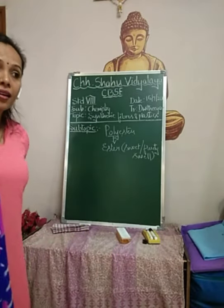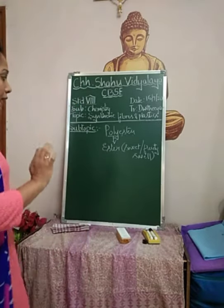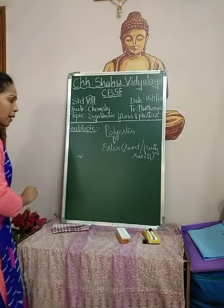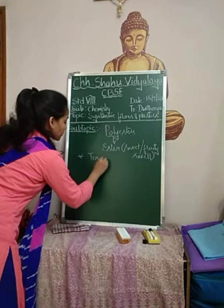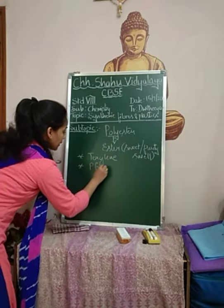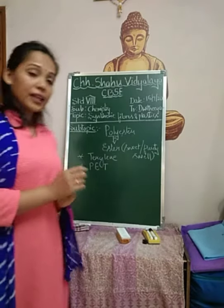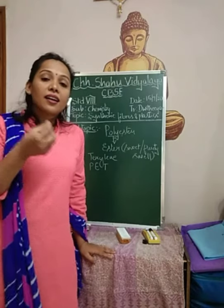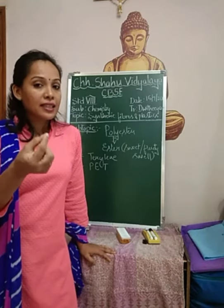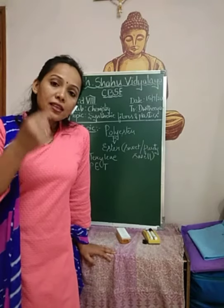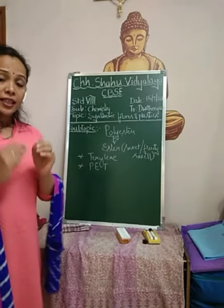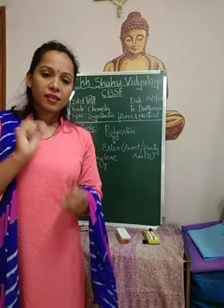Esters may be of different types, and based on that we can obtain different types of polyesters. The two important polyesters we are going to talk about are terrylene and polyethylene terephthalate, that is PET. Terrylene is a polyester which can be drawn into very fine thread and is used to make fabric because it can be easily woven, just like other fibers.